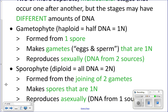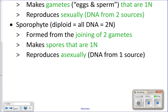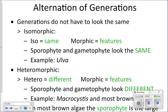There are two types of alternation of generations life cycles: isomorphic and heteromorphic. In isomorphic alternation of generations, the sporophyte and gametophyte have the same features and look exactly the same, so you cannot tell just by looking at them which stage it is. In heteromorphic, the sporophyte and gametophyte look different, so you can tell them apart visually.